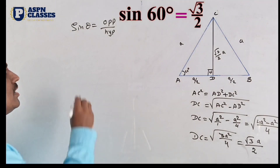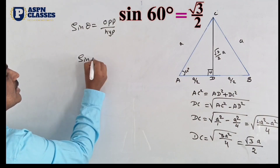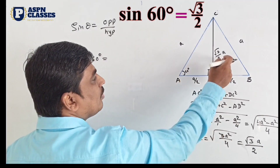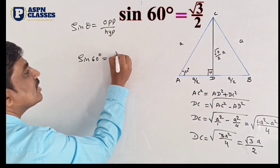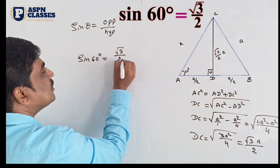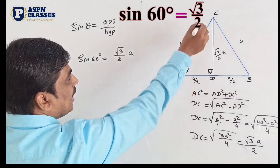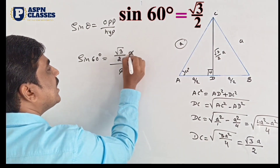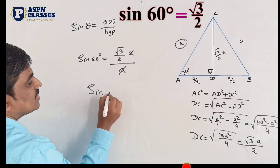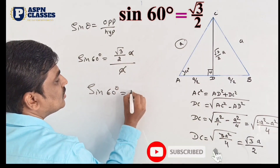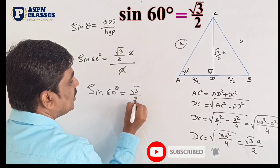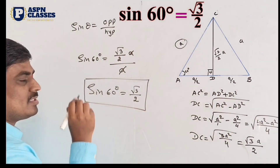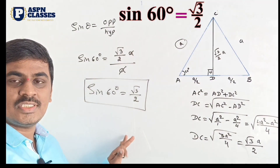Now let's apply the formula to sin(60°). In 60 degrees, the opposite side corresponds to DC which is (√3/2)·a, divided by hypotenuse a. Dividing, a cancels, so the answer is sin(60°) = √3/2. This is our answer. Got it friends? Understand?